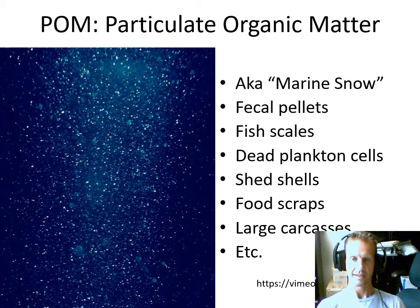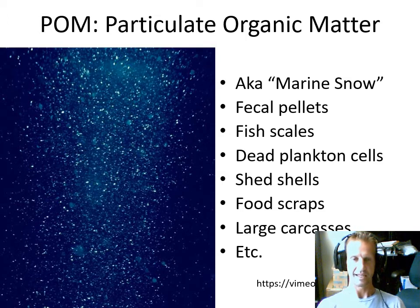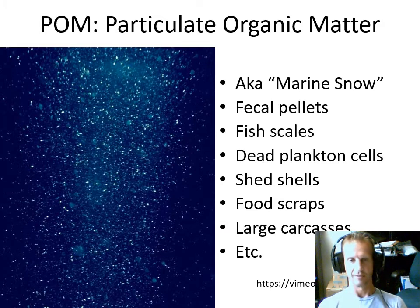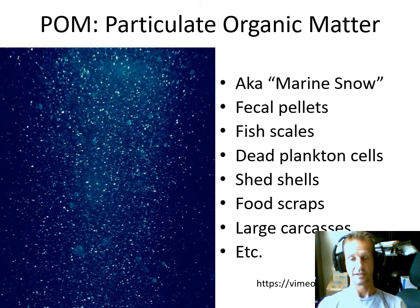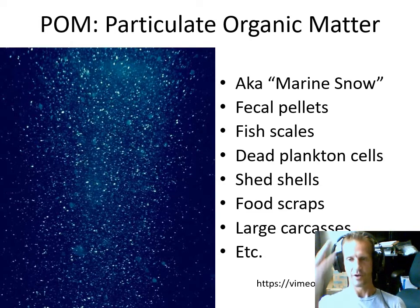Particulate organic matter is easier to understand because you can actually see it — at least under a microscope or with a bright light against a dark background. Some oceanographers call it marine snow because in the bright lights of a submarine in the deep sea it actually looks like snowflakes drifting down. It's really flecks of tiny fecal pellets, dead phytoplankton cells, fish scales, bits of jellyfish slime — all kinds of organic waste matter slowly falling to the deep sea. Even a dead whale falling to the ocean bottom could be considered particulate organic matter, just a really large particle.